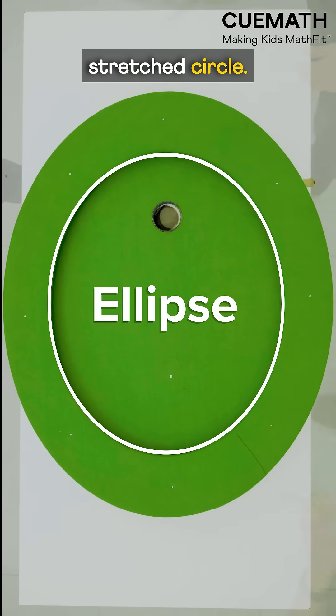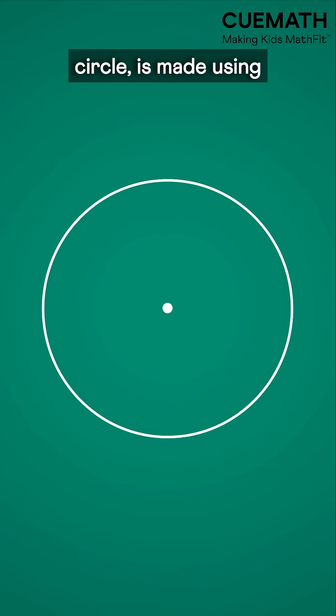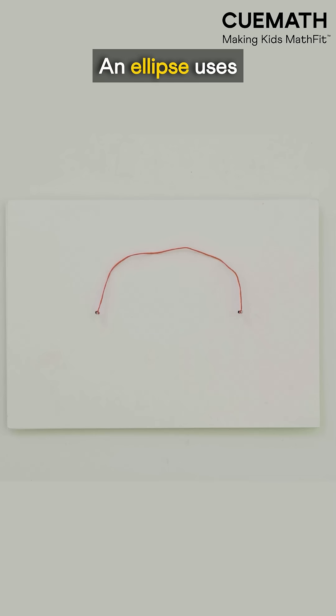An ellipse, sort of a stretched circle. Just like a circle is made using one point and a fixed length, an ellipse uses two fixed points and a fixed length.